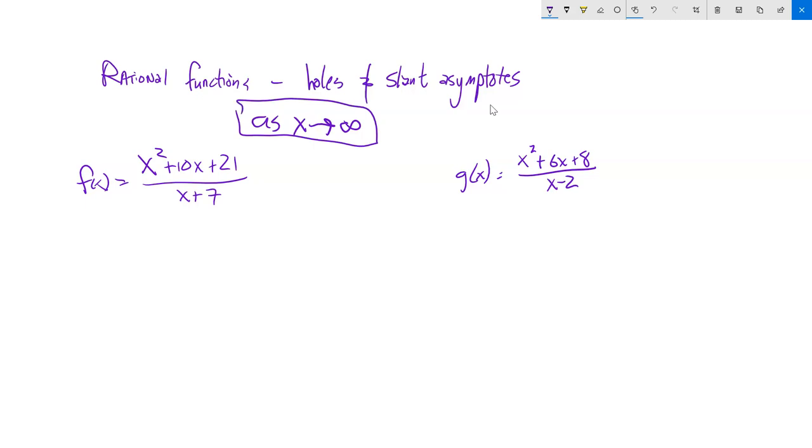That's really going to apply to slant asymptotes. We might as well throw holes in that same category because we do the same sort of analysis to discover holes. So I'm going to sketch a graph of each of these. First thing I'm going to do is see if I have any holes.